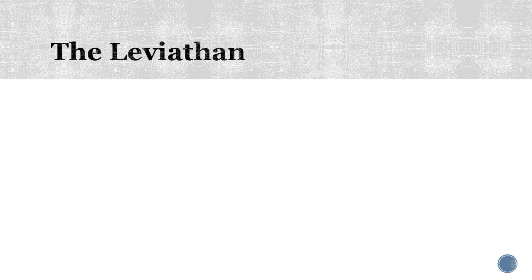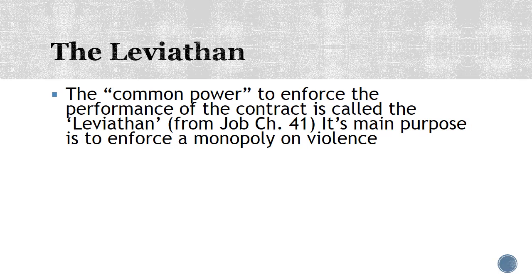This common power Hobbes calls the Leviathan — a quote from the Bible, Job chapter 41. The Leviathan's main purpose is to enforce a monopoly on violence, because the biggest problem in the state of nature is a security problem. The idea is for the Leviathan — some entity, which could be an organization, a committee, or a strong king as Hobbes preferred — to enforce a monopoly on violence, saying: 'Everybody who is party to this agreement has put me in charge. None of you get to use violence anymore. That way you don't have to be afraid of anybody else using it. And if anybody breaks their promise not to use violence, I'm going to come and punish them.' That's essentially the role that the Leviathan plays.